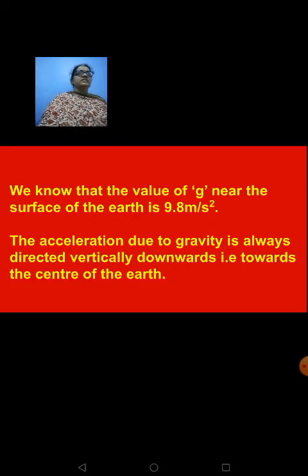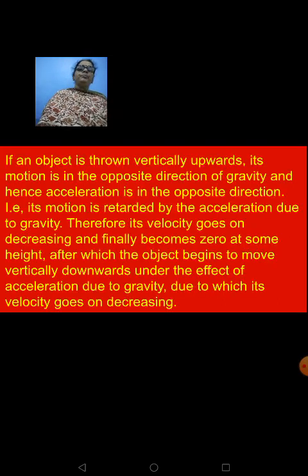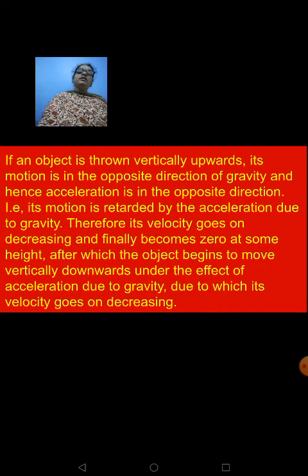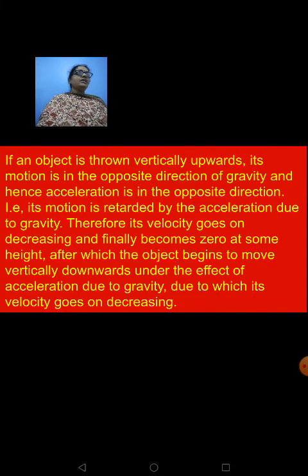Acceleration due to gravity is always directed vertically downwards. It is talking about the acceleration shown by an object falling towards the surface of the earth, that is towards the center of the earth. Whenever you throw an object in the upward direction, it always moves in the opposite direction of gravity. When the object is coming downwards, it is coming down due to the force of gravity. Earth is trying to pull the object towards itself. This object also exerts a force, but that goes unnoticed because of the huge mass of the earth.